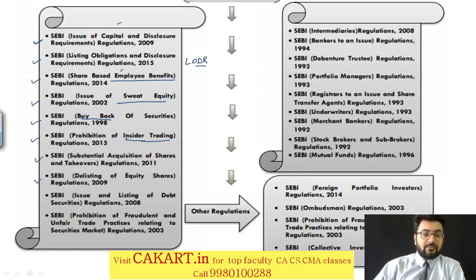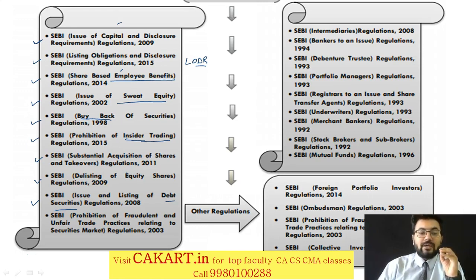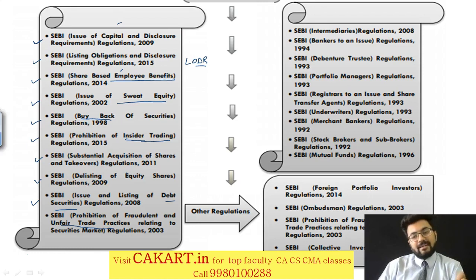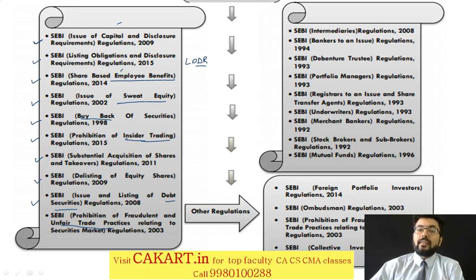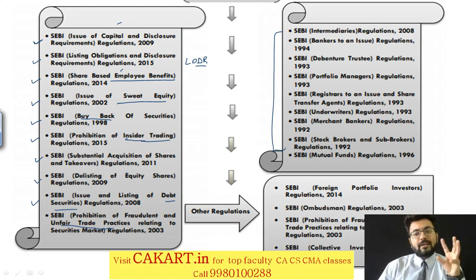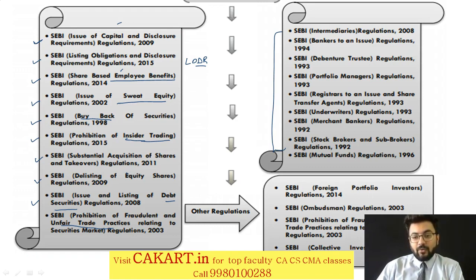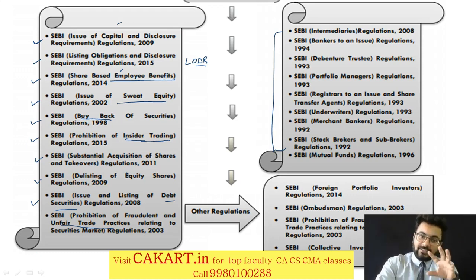After delisting, we have debt securities - meaning debentures or any other kind of debt securities issued by the company. Then prohibition of unfair trade practices relating to the securities market - here we will talk about the Harshad Mehta scam and what kind of unfair trade practices he adopted. There are also intermediary regulations - the different intermediaries that help your company in listing and trading. Other regulations include ombudsman, prohibition of fraudulent practices, and collective investment scheme, which you have also covered in Company Law.